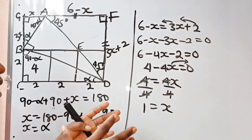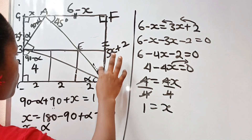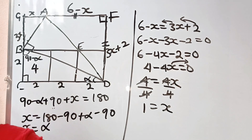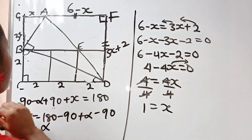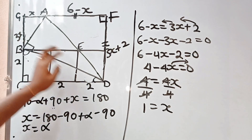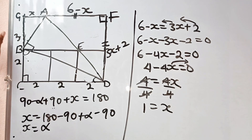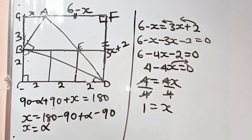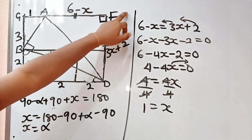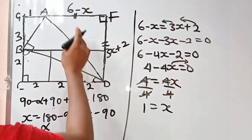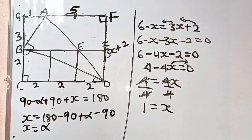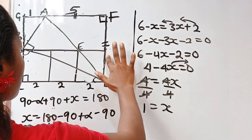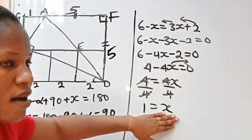Now substituting X equals 1 back into our diagram: GB equals 3 times 1, which is 3. GA equals X, which is 1. AF equals 6 minus X, which is 6 minus 1, equaling 5. And FD equals 3 times 1 plus 2, which is 5. So the whole of this side is 5.